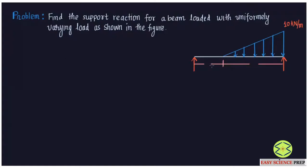The load starts 2 meters from point A and acts over a length of 6 meters. The end points are A and B. The support reaction at point A is RA and the support reaction at point B is RB.